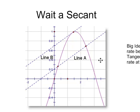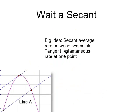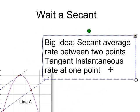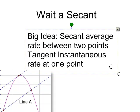And the tangent line — line B — is used to measure instantaneous rate of change. So a secant ends up being a rate between two points, and a tangent ends up being a rate at one point.